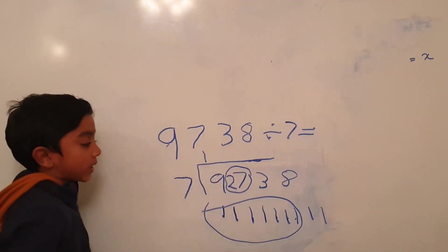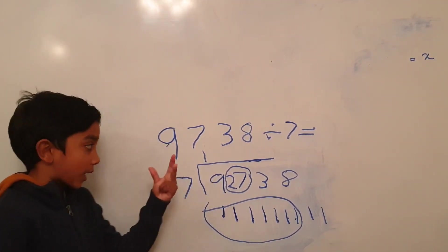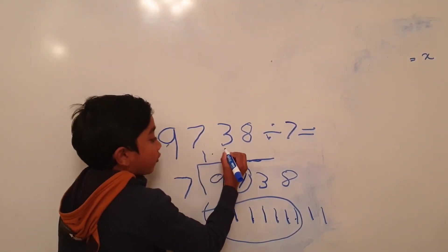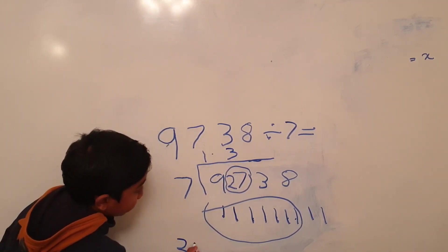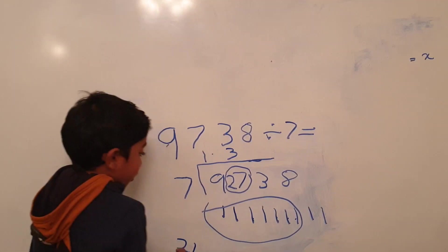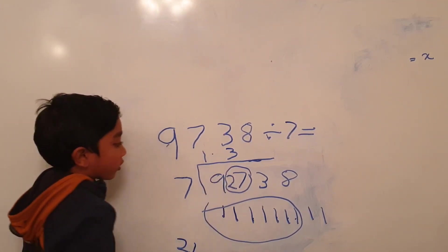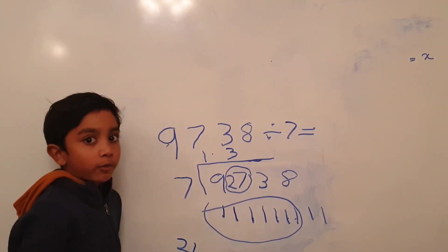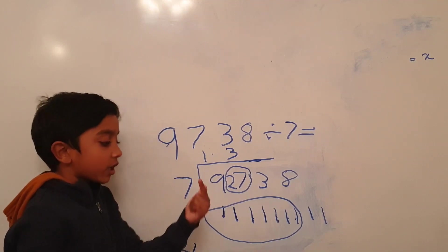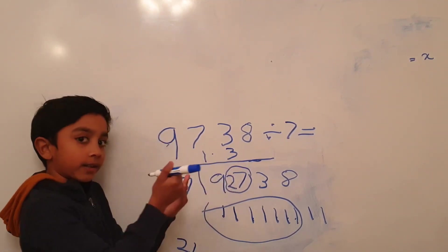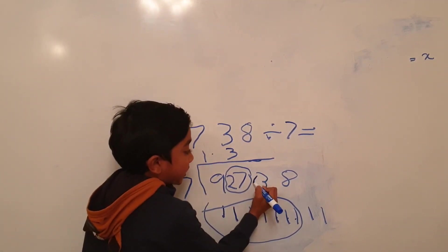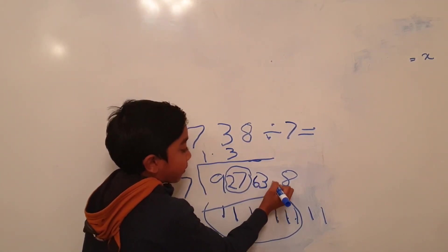How many 7s in 27? 7, 14, 21. Three goes over here. And we landed at 21. 21 got into the bus. How many remaining? 21, 22, 23, 24, 25, 26, 27. Six. 6 stays with the other people in the bus stop.